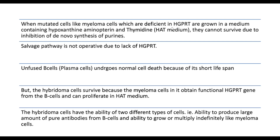HGPRT enzyme — hypoxanthine-guanine phosphoribosyltransferase — is involved in the salvage pathway of nucleotide synthesis.